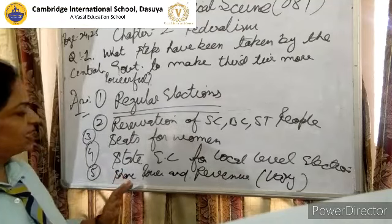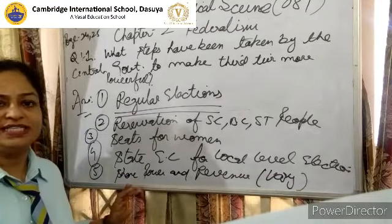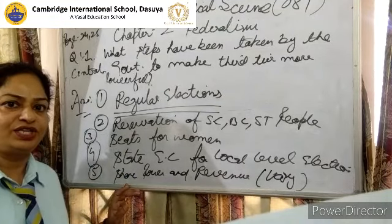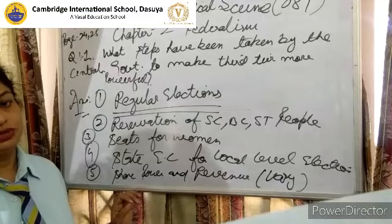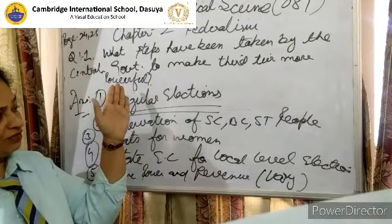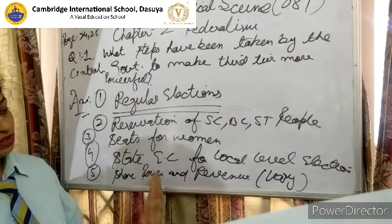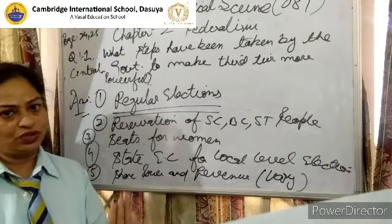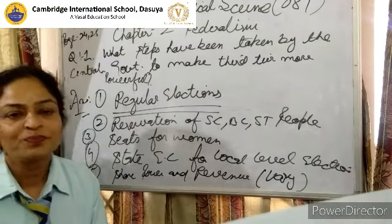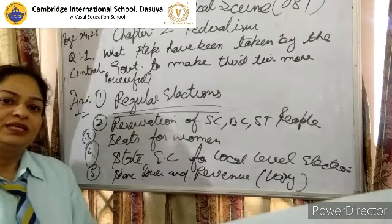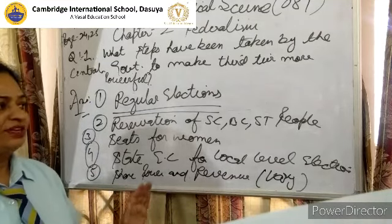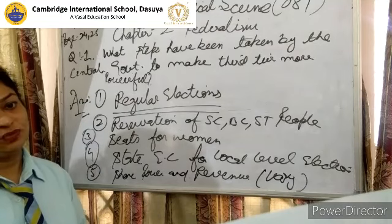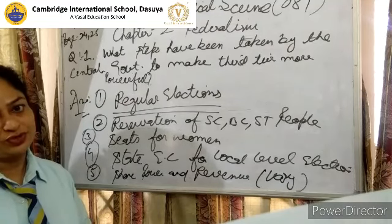These are the five changes made after 1992 to strengthen decentralization. After learning this, we can say that as of now, the local level government is more powerful. This completes our first question.